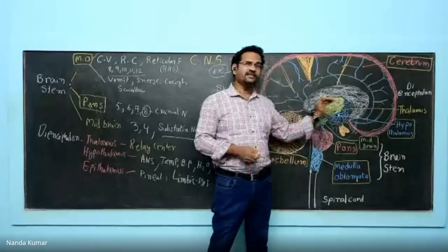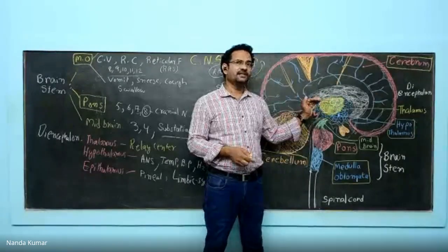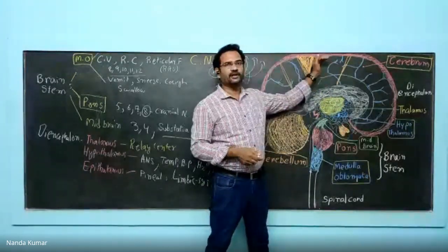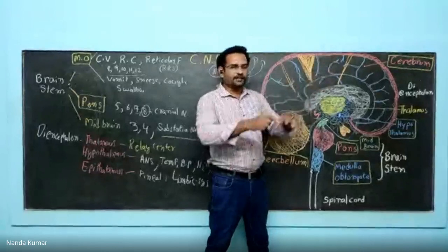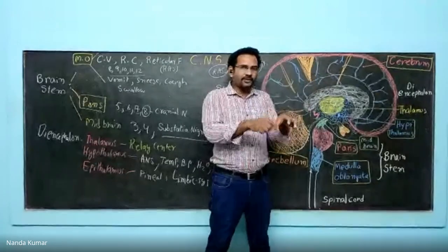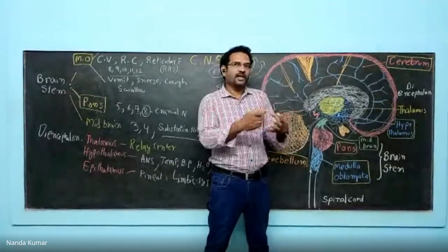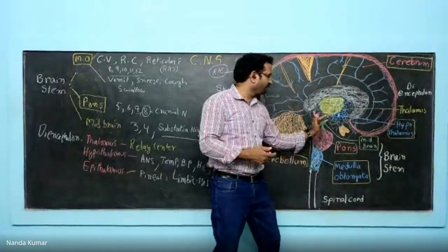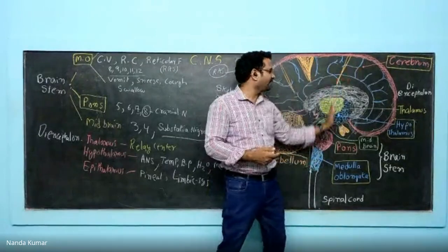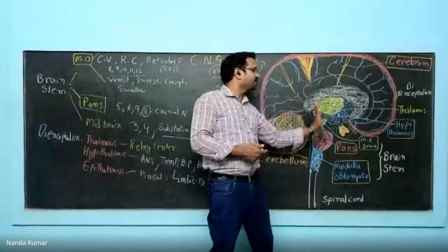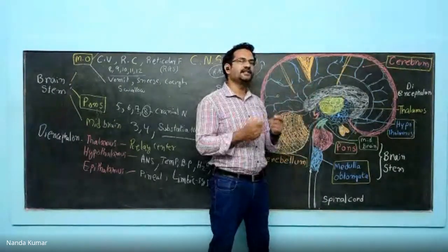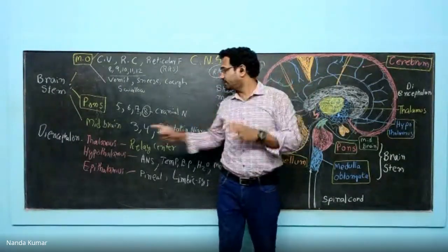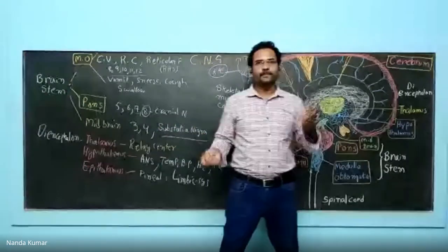The thalamus is a kind of relay center. The cerebral cortex will process all information, and sensory information will be moving through this thalamus on its way there. Hence, thalamus is known as a relay center.